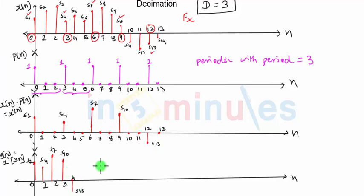So you can see this is the signal that I was looking for. This is my y of n, and it is nothing but the decimated version of x of n. So it is my x of n which is downscaled by 3, and this is what we get.